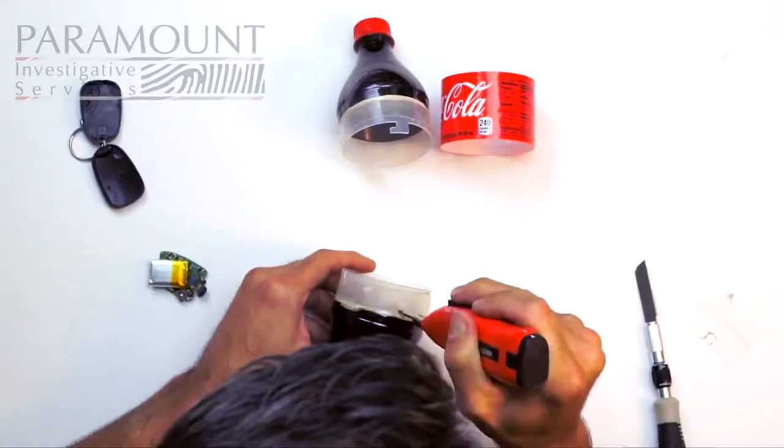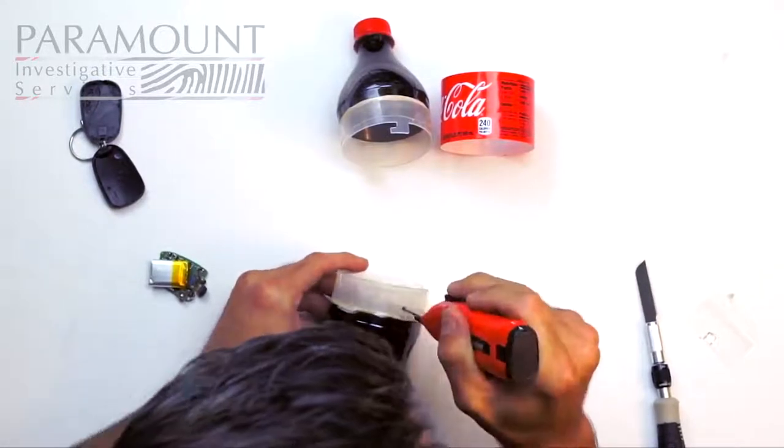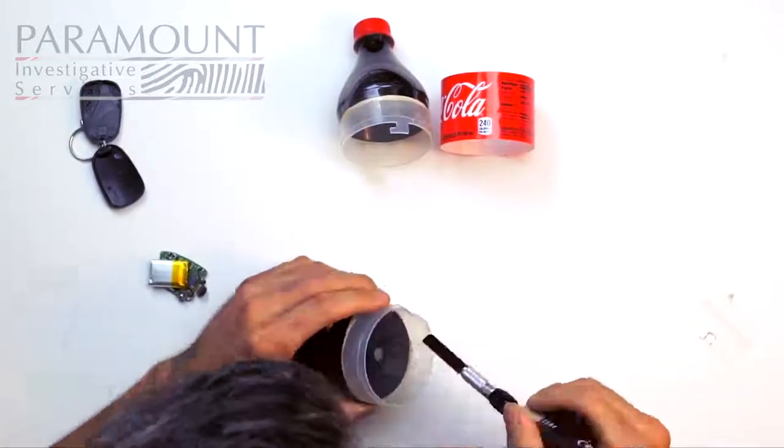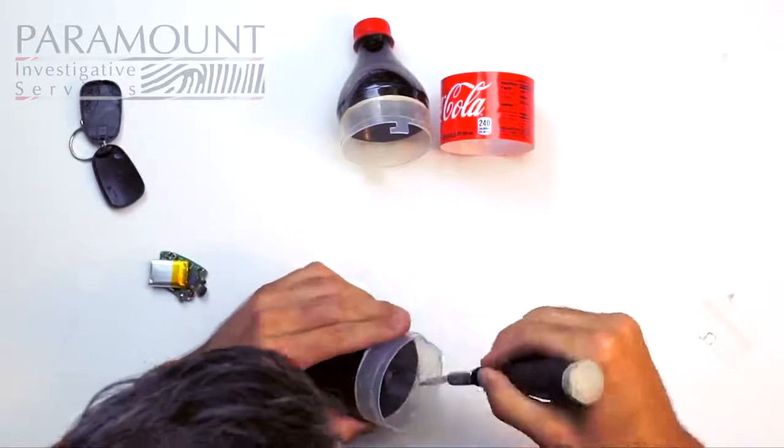So we're almost done here and just kind of again work your way around the little hole. Go ahead and cut the excess melted plastic.